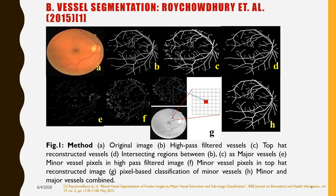The first paper I am reviewing is one I wrote during my graduate studies, called 'Blood Vessel Segmentation of Fundus Images by Major Vessel Extraction and Sub-vessel Classification.' Most methods looking at blood vessel segmentation aim to find fine blood vessel structures that can be indicative of new vascularization — a strong indicator of severe diabetic retinopathy requiring treatment.